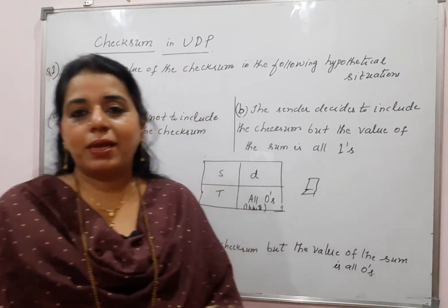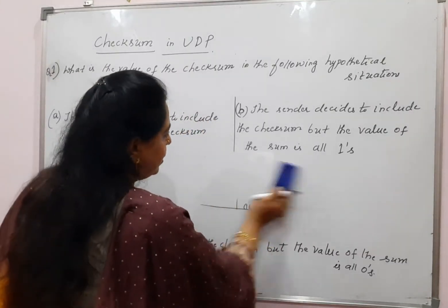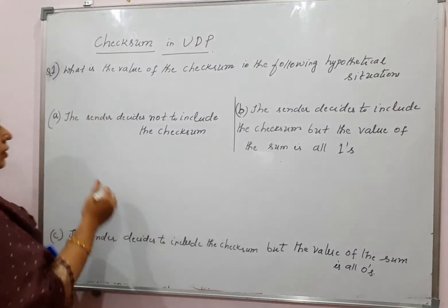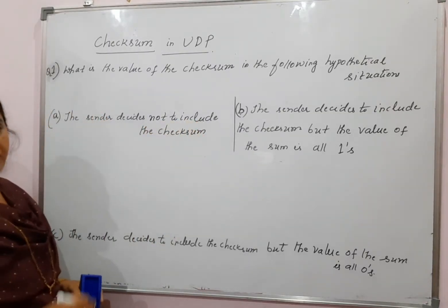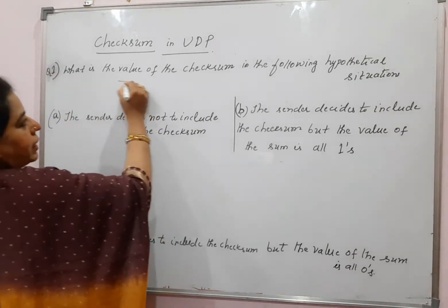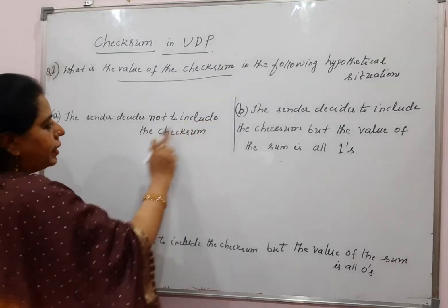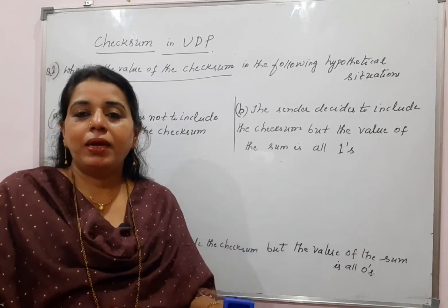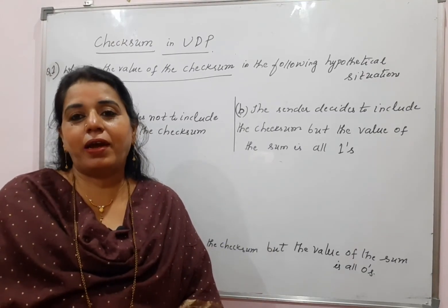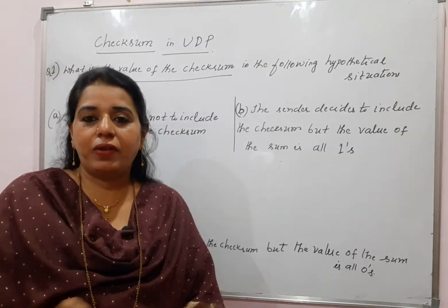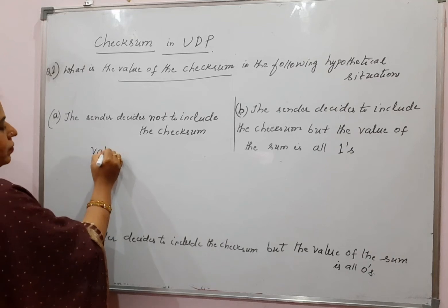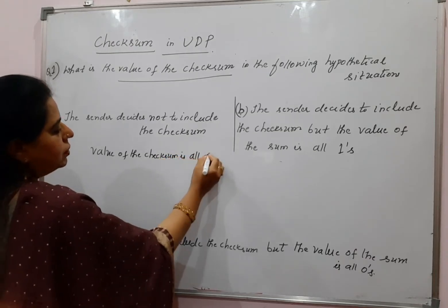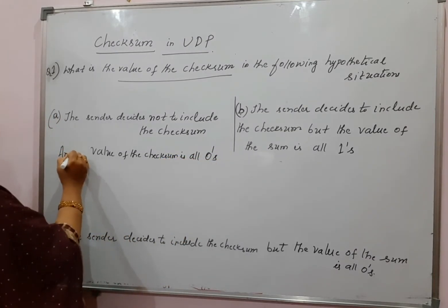Based on this concept, questions can be asked. The question asks: what is the value of the checksum in the following hypothetical situations? Three situations are given. The first situation is: the sender decides not to include the checksum. This is very straightforward — if the sender does not want to include the checksum, it fills all the bits in that field with zeros. So the value of the checksum is all zeros.